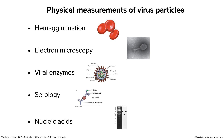I want to talk about physical measurements of virus particles. We'll go through hemagglutination, which uses red blood cells to measure viruses; electron microscopy, where you look at a virus preparation and count particles; measuring viral enzymes, since some virus particles have enzymatic activities we can assay as a surrogate for infectivity; serology using antibodies to measure virus proteins and particles; and assays to measure nucleic acids — very commonly used techniques.